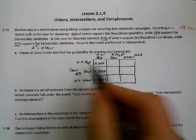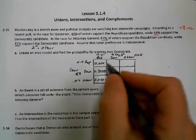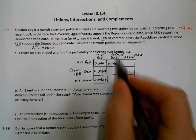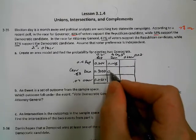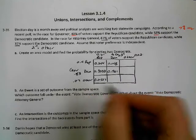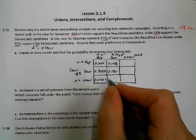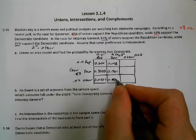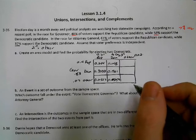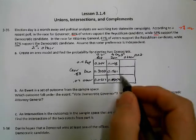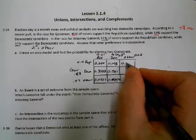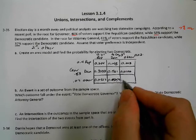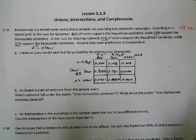Republican governor and Democratic attorney general: 0.148. Democrat governor and Democrat AG: 0.1961. Other governor and Democrat AG: 0.0259. Then the remaining cells: Republican governor and other AG is 0.008, Democrat governor and other AG is 0.0106, and other governor and other AG is 0.0014 — very unlikely, less than 1%.